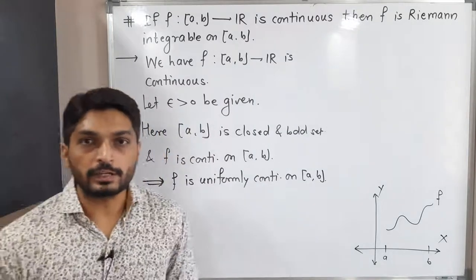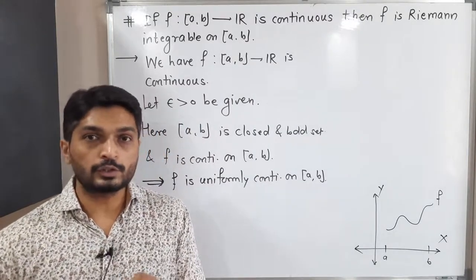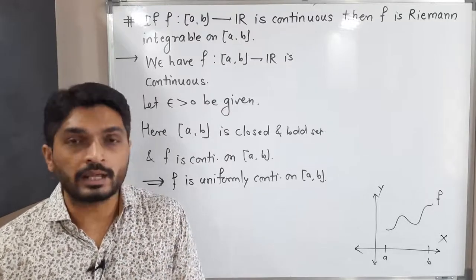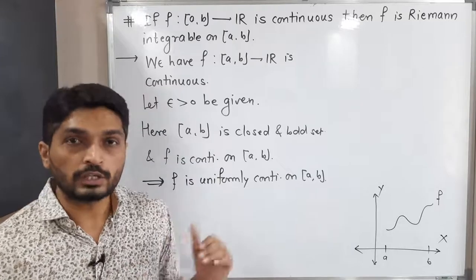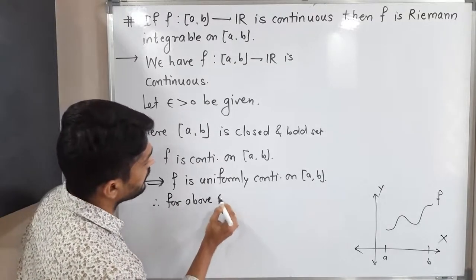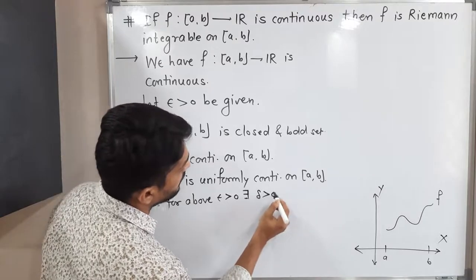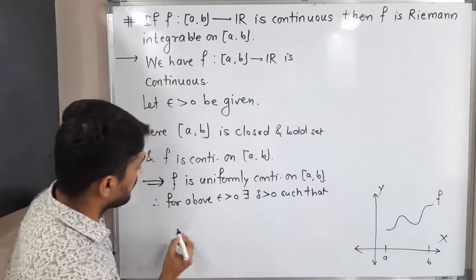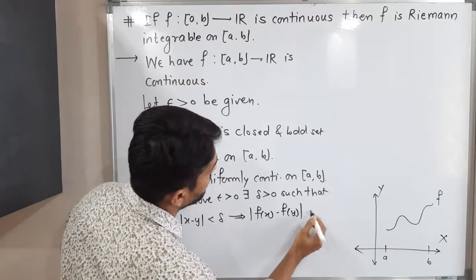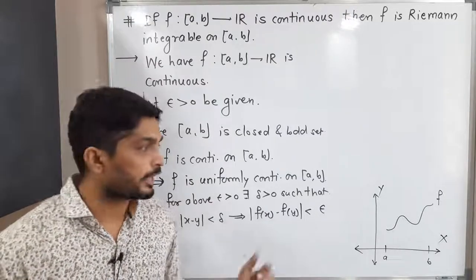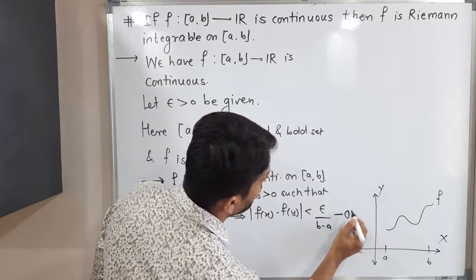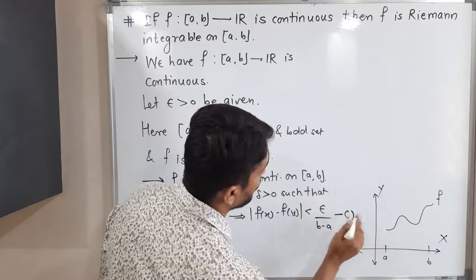As f is uniformly continuous, we follow the definition of uniform continuity: for a given epsilon greater than 0, there exists delta greater than 0 such that |x − y| < delta implies |f(x) − f(y)| < epsilon. For our given epsilon, there exists delta > 0 such that |x − y| < delta implies |f(x) − f(y)| < ε/(b − a). We make that small adjustment — using ε/(b − a) instead of ε — and call this Statement 1.